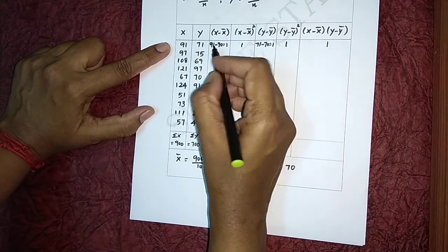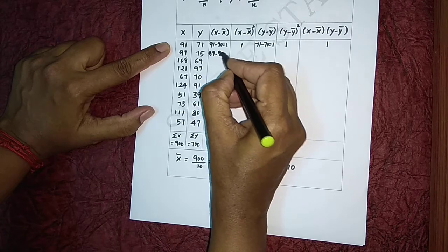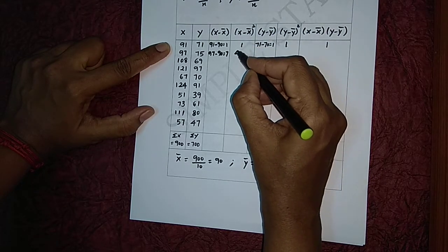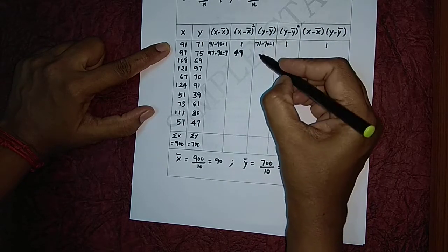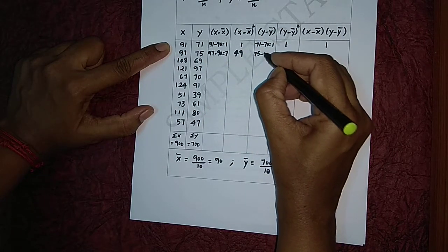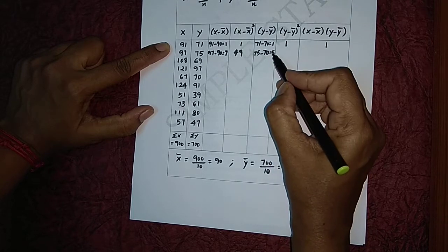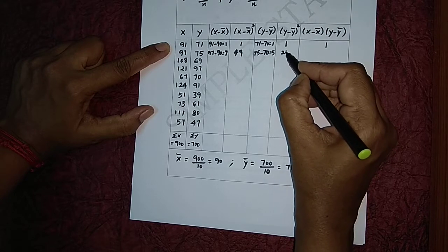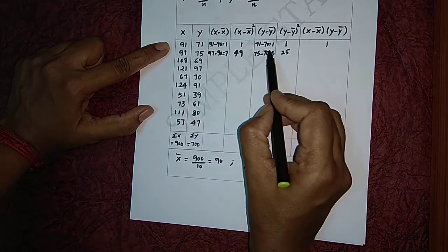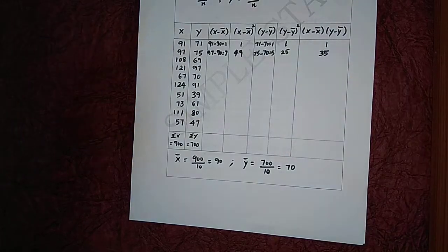For the second value: x = 97, so 97 − 90 = 7, and 7² = 49. Similarly, y = 75, so 75 − 70 = 5, and 5² = 25. Then (x − x̄)(y − ȳ) = 7 × 5 = 35.